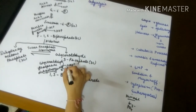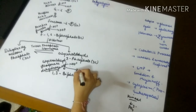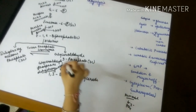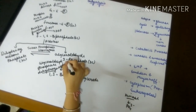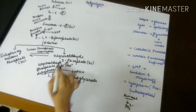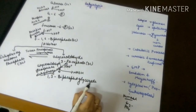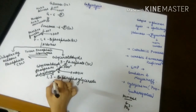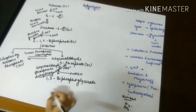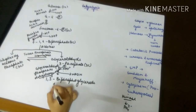Glyceraldehyde-3-phosphate is then converted into 1,3-bisphosphoglycerate. There is production of NADH and utilization of a phosphate group. This is also a reversible process.